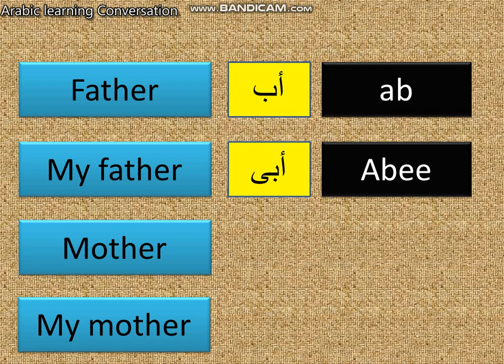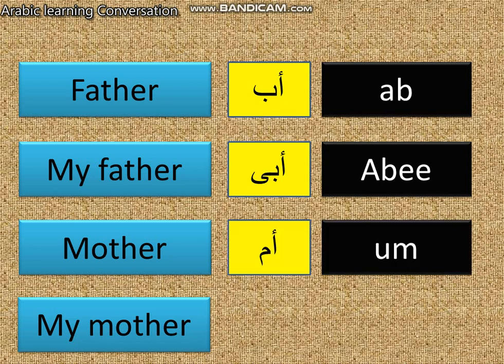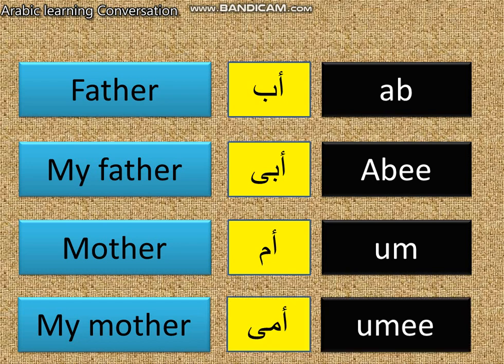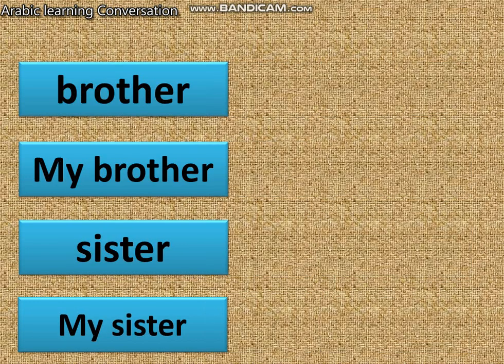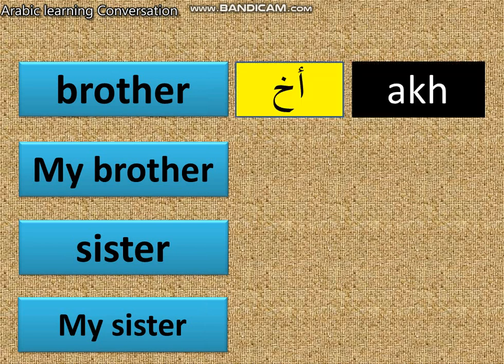The next word is mother. Mother in Arabic is 'om.' To say my mother, you add the 'ee' sound at the end — 'ommi.' Brother is called 'ah.' My brother is called 'ahi.'